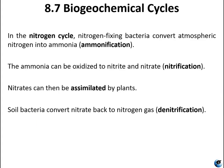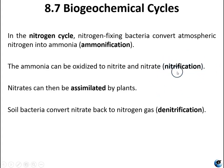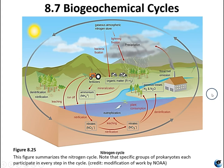The nitrogen cycle has four steps. First, ammonification: nitrogen-fixing bacteria convert atmospheric nitrogen (N2) into ammonia (NH3). Second, nitrification: ammonia is oxidized to nitrite and nitrate. Third, assimilation: nitrates are taken up by plants. Fourth, denitrification: soil bacteria convert nitrate back into nitrogen gas. Figure 8-25 summarizes the nitrogen cycle, noting that specific groups of prokaryotes participate in every step.